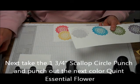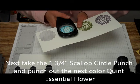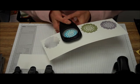Then you're going to use the 1-3/4 inch scallop circle punch. You see how that lines up with the next scallop? You're just going to punch that out.